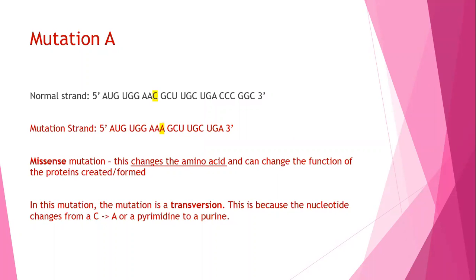In mutation A, compared to the normal strand, all the codons are the same except for the highlighted base A. This is an example of a missense mutation. The codon is changed into another amino acid. This can alter the function of the protein created.